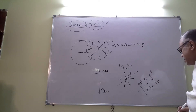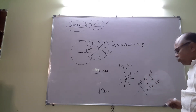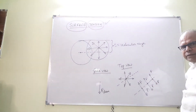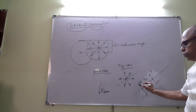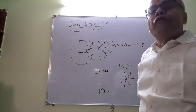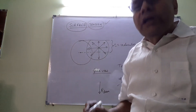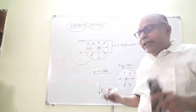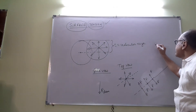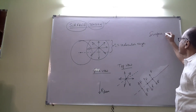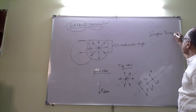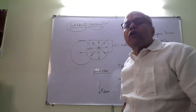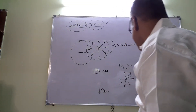Now, if you ask how much is the total force on one side, it depends on the length of the line. The longer the line, the more the force. Therefore, the force of surface tension is not given in Newtons but as force per unit length. That is why the unit of surface tension is Newton per meter.